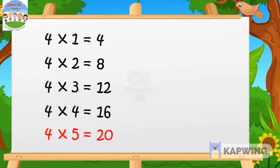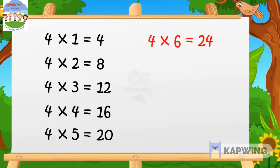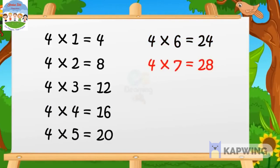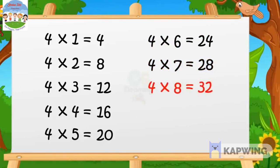4 fives are 20, 4 fives are 20. 4 sixes are 24, 4 sixes are 24. 4 sevens are 28, 4 sevens are 28. 4 eights are 32, 4 eights are 32.